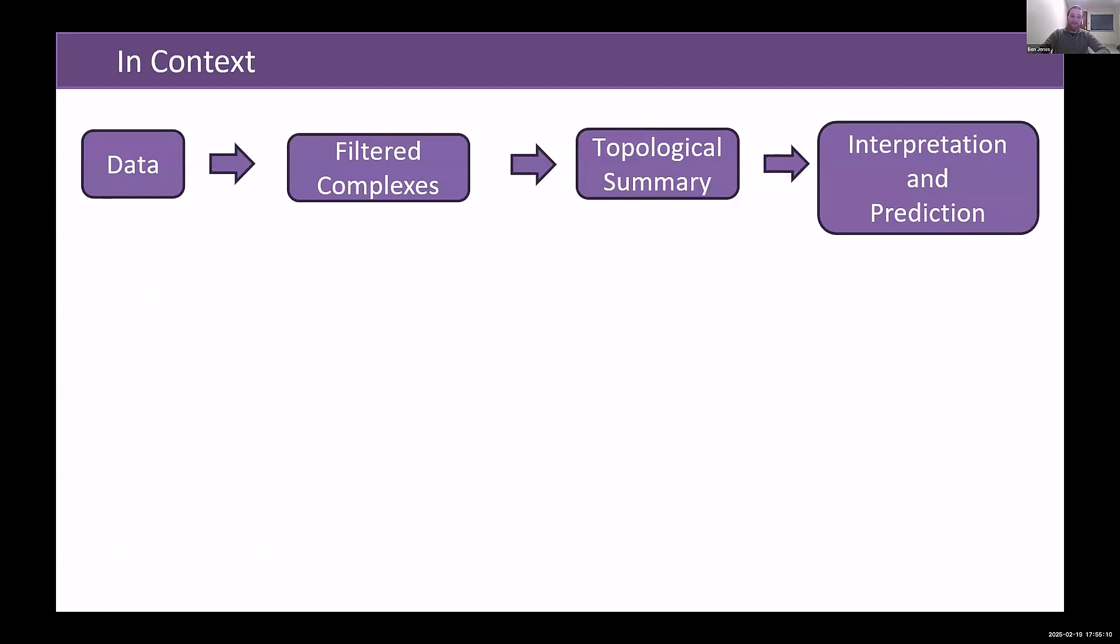First I want to place this in context. If you have a typical TDA pipeline, you usually take data, turn it into a filtered complex, compute a topological summary, and then do some sort of interpretation and prediction, often with machine learning methods.